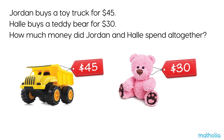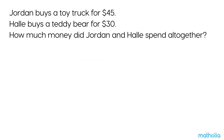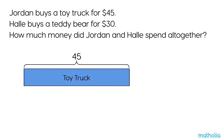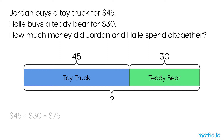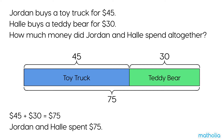Let's use a bar model to help find the answer. We can show the price of the toy truck using this bar and the price of the teddy bear using the smaller bar. To find the total amount of money spent, we add: $45 plus $30 equals $75. Jordan and Hallie spent $75 all together.